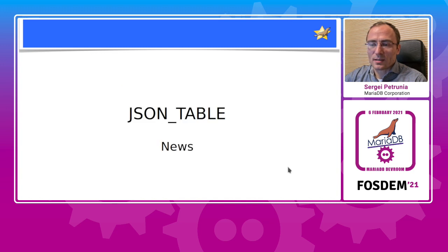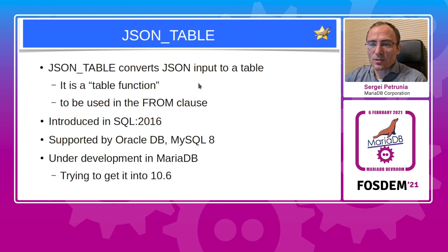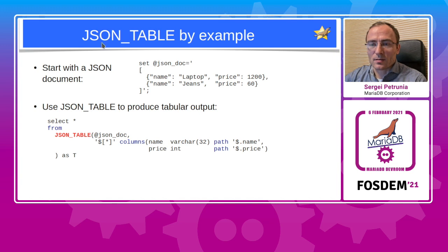The next topic — which is news — is the JSON table feature, currently under development in MariaDB. JSON table is a table function: it takes a JSON input and converts it into a table. Unlike other functions, you use it in the FROM clause. It was introduced in SQL 2016 and is supported in Oracle database and MySQL. We are trying to get it into MariaDB 10.6. As an example: given a JSON document which is an array of two objects with the same elements, if we want that data in tabular form, we call the JSON table function — SELECT * FROM JSON_TABLE — specify which columns we want, and get the data in tabular form.